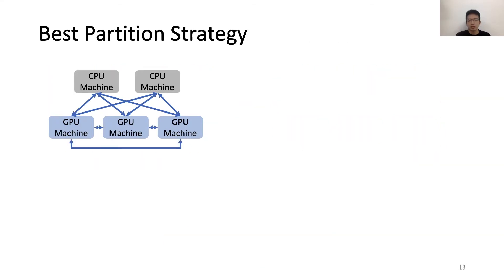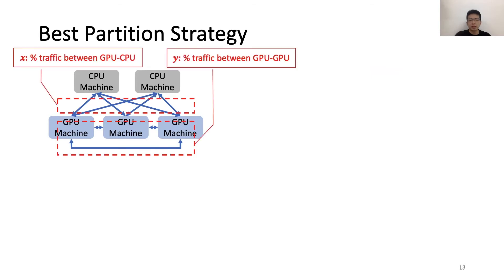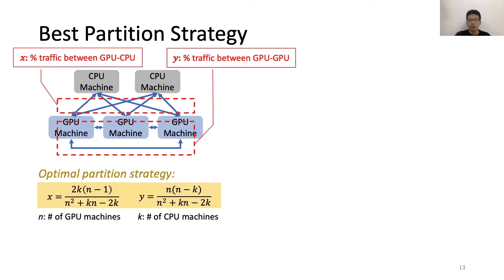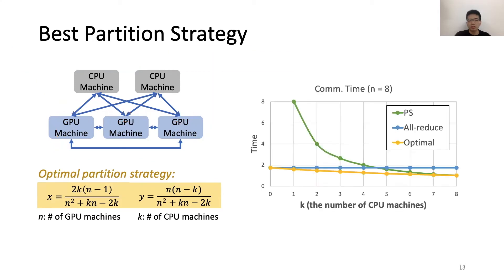To solve this problem, we use x and y to represent the amount of traffic for the two combined strategies respectively. And after some modeling, we've calculated optimal x and y as these two equations, where n represents the number of GPU machines and k represents the number of CPU machines. In theory, this strategy can achieve minimal communication time.